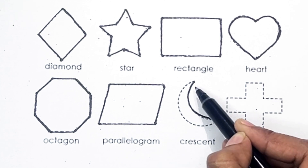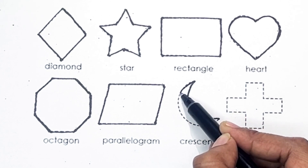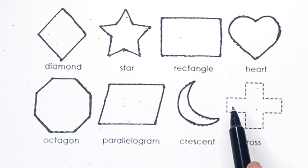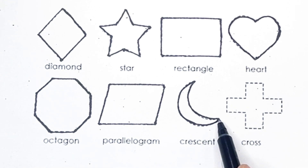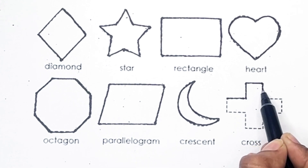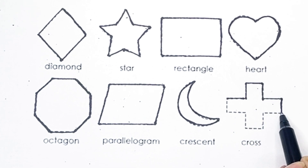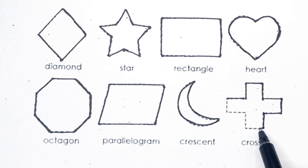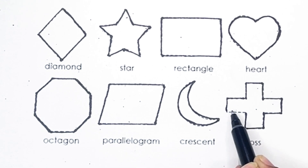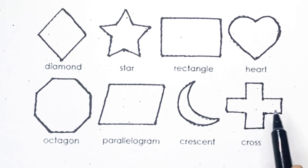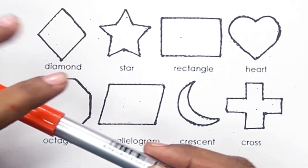A, B, C, D, E, F, I, J, K, L, M, O, P, Q, R, S, T, U, V, W, X, Y, and Z. Now I know my ABCs. Next time won't you sing with me? Cross. Diamond.